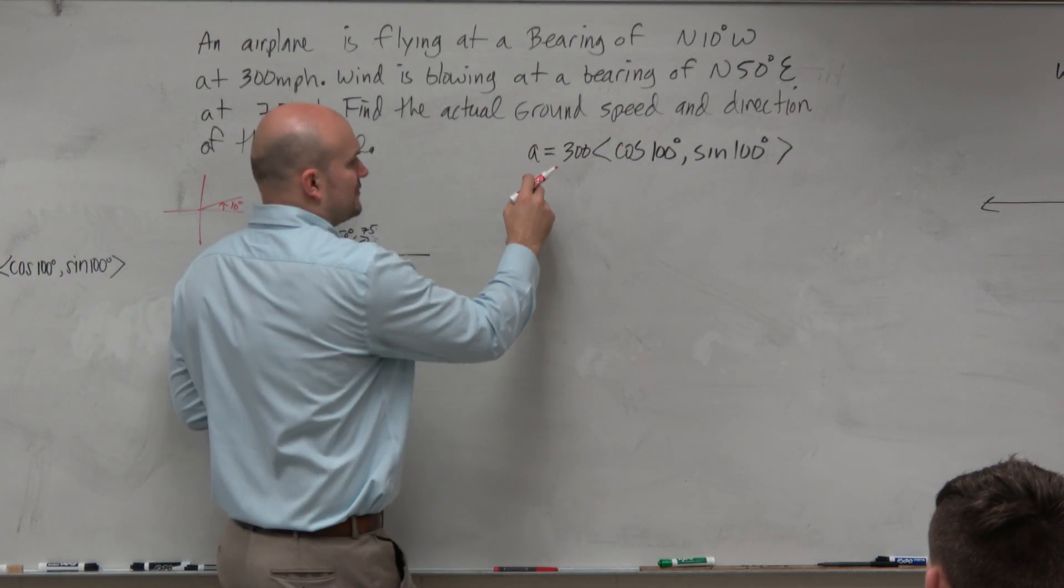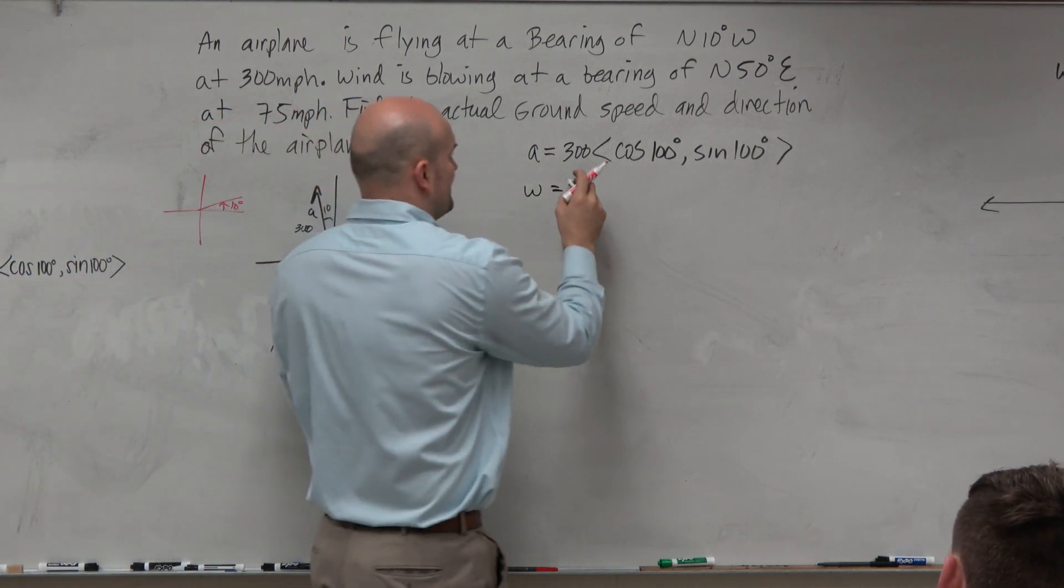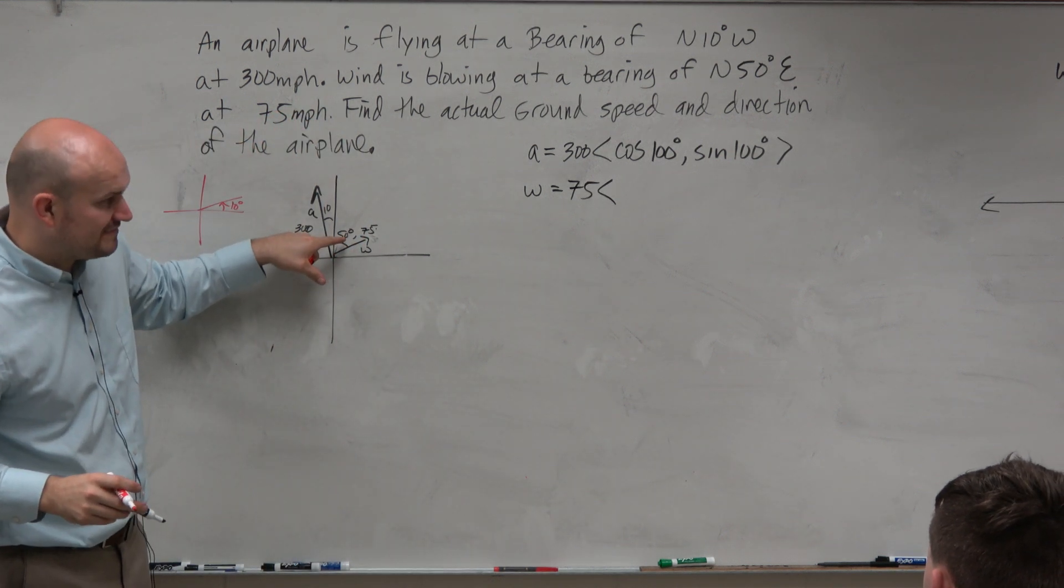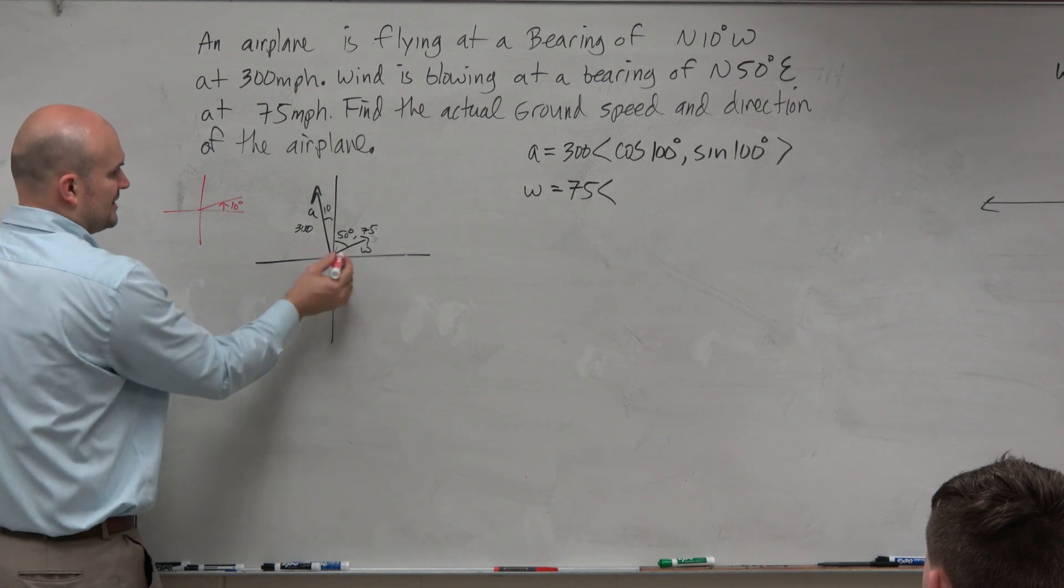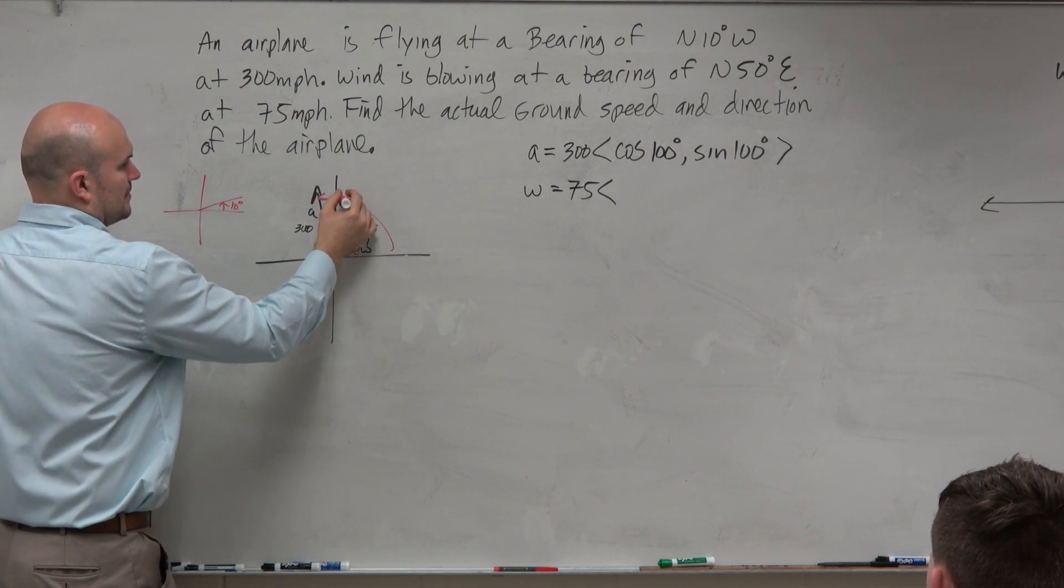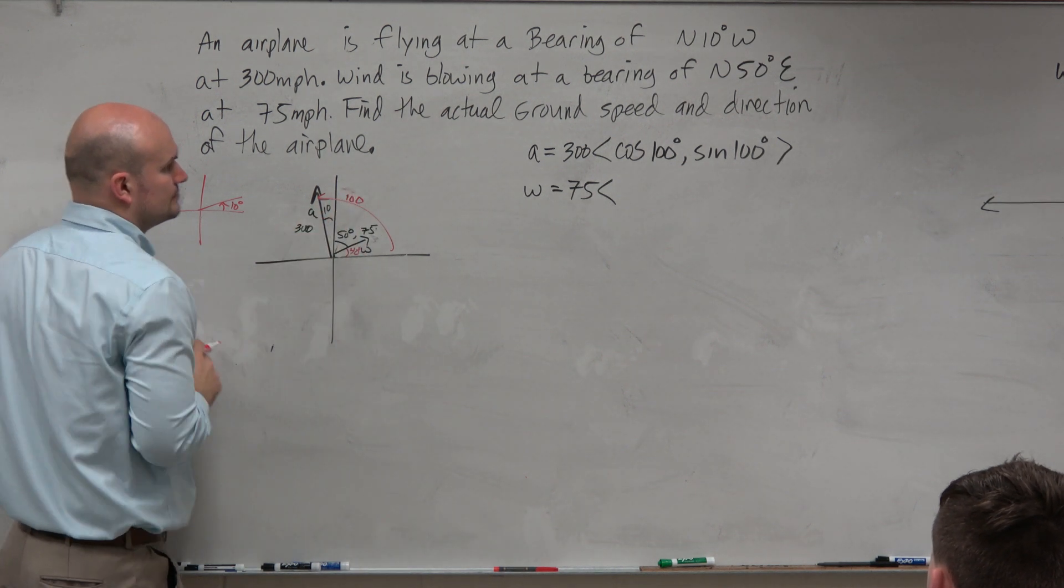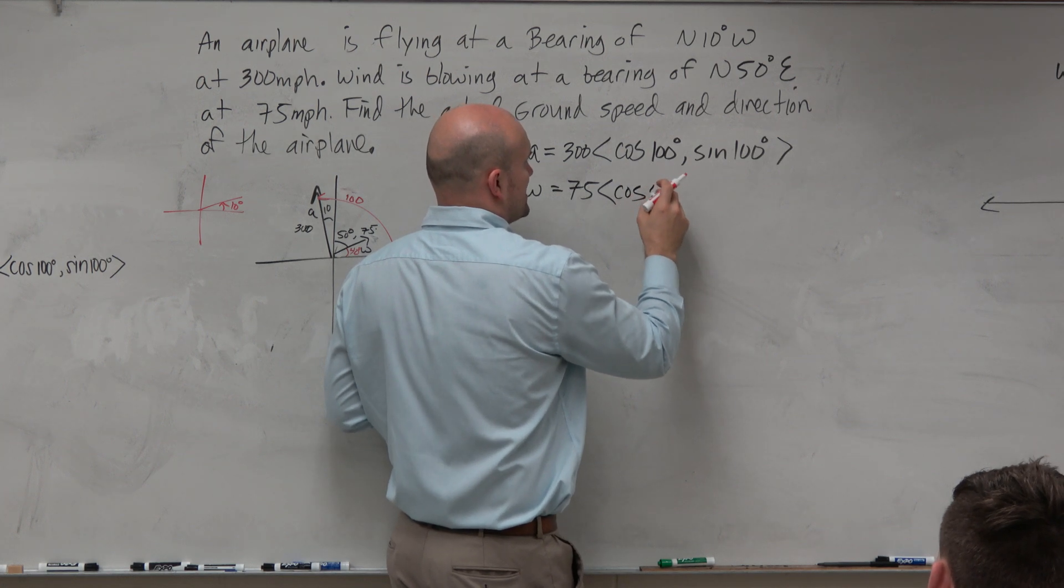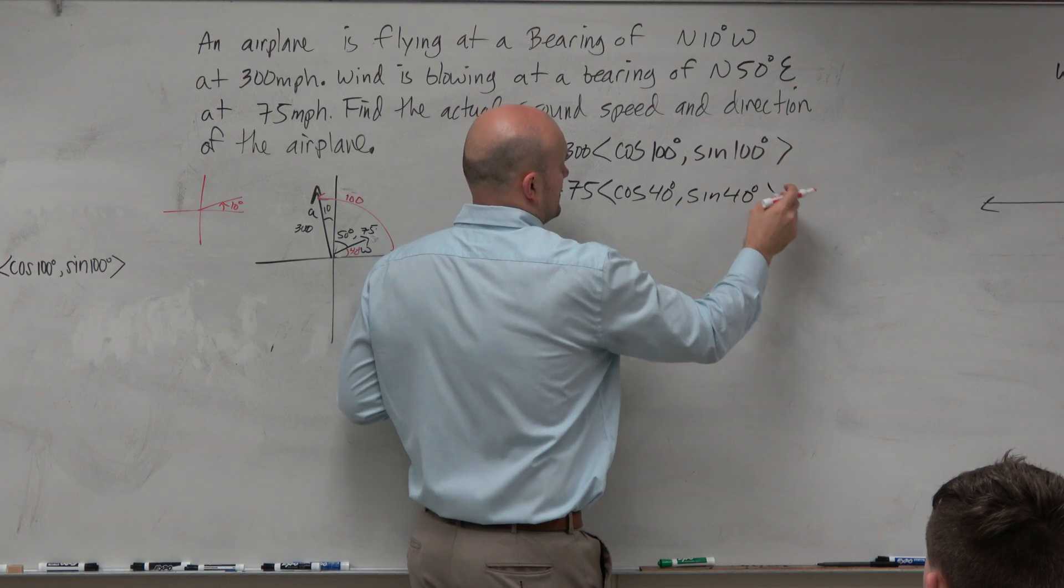And then we can do the same for the wind. The wind has a magnitude of 75 miles per hour. And then this angle, again, don't type in 50, because 50 from standard form is up there. So we need to figure this out to be 40 degrees, right? And that was 100 degrees. So therefore, we'll say the cosine of 40 degrees times the sine of 40 degrees.